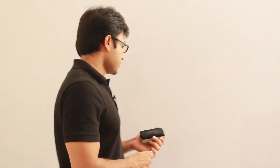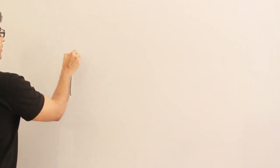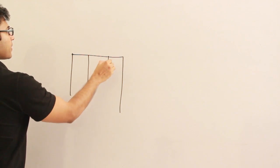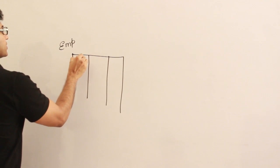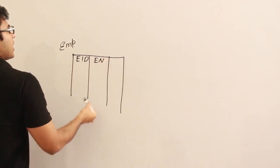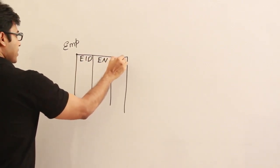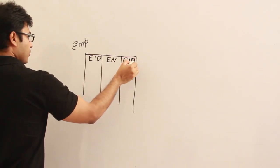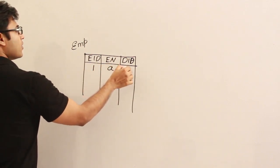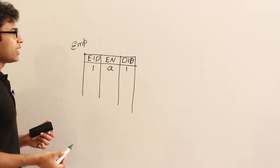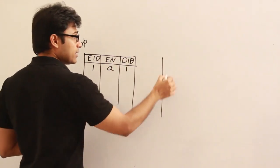In most databases, we have various tables and form various relations. Let's take an example: we have an employee table containing all the information about employees — employee ID, employee name, and department ID indicating which department the employee works in. For employee number one, whose name is A, they work for department number one.